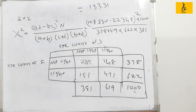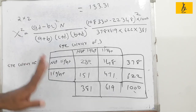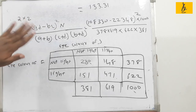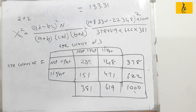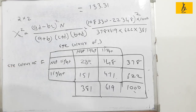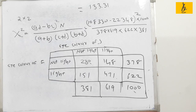We have discussed this shortcut method and used the third method on this application. This is the shortcut method. Now in this class, we will discuss the third class, which is the chi-square test for population variance. We will discuss the chi-square test for population variance in detail.